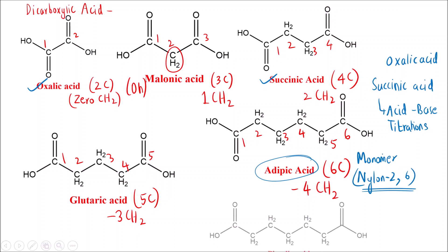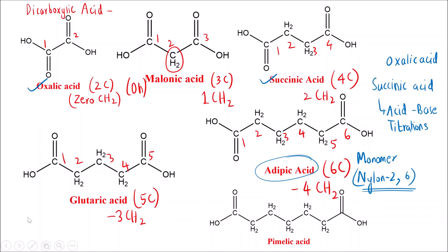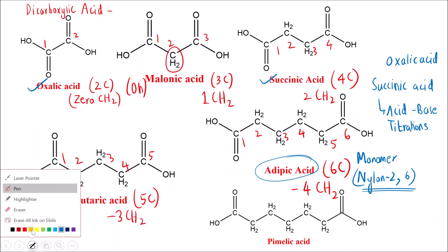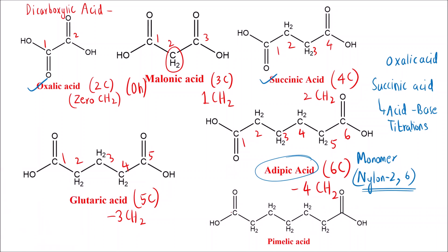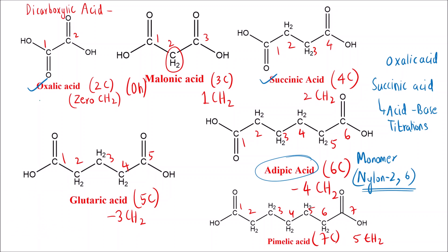The last acid is pimelic acid — a seven-carbon dicarboxylic acid with five CH₂ groups. Counting the carbons: one, two, three, four, five, six, and seven. 'P' stands for pimelic acid, represented by 'pie' in the mnemonic.